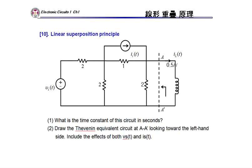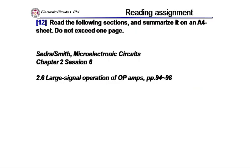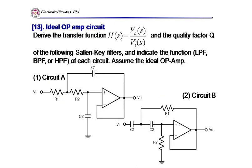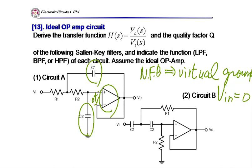Superposition principle: for a linear time-invariant system, linear superposition holds. There are reading assignments — you'll find the titles in your textbook. Review in one page. Ideal op-amp — this is a Sallen-Key filter, second order, because it has two energy storage elements. Ideal op-amp uses negative feedback — there is a virtual ground at the input. Virtual ground means the input voltage between the two input nodes is zero.